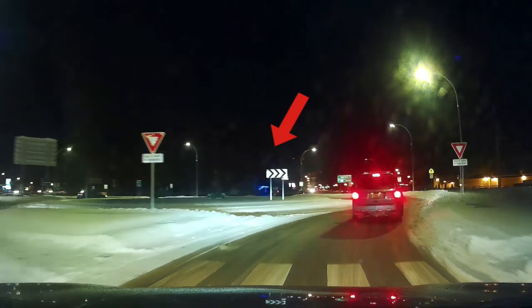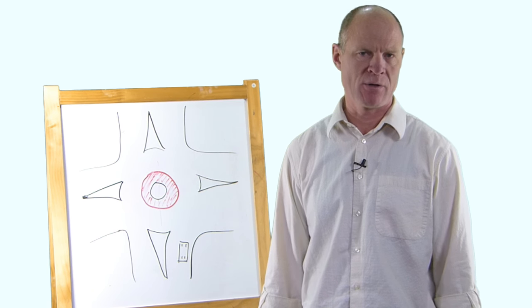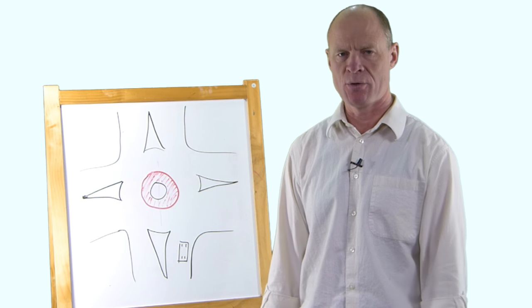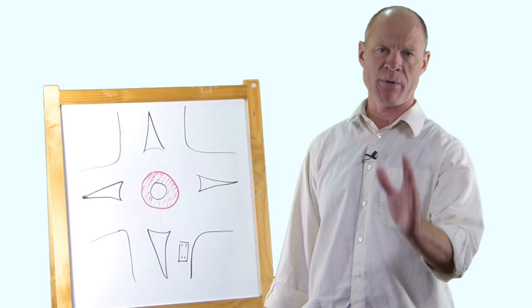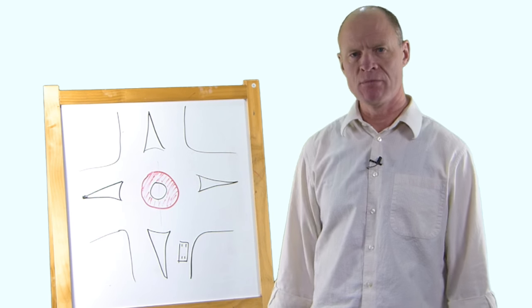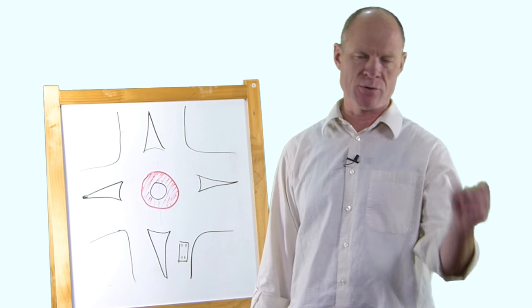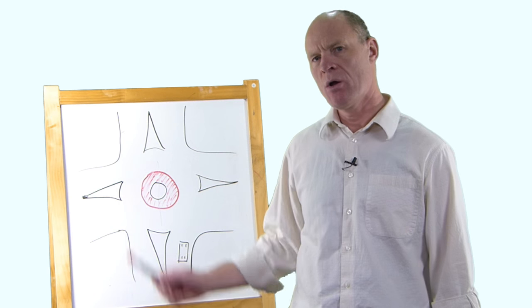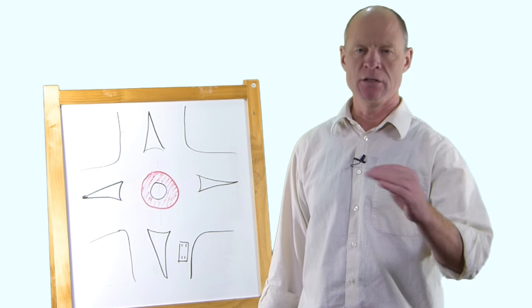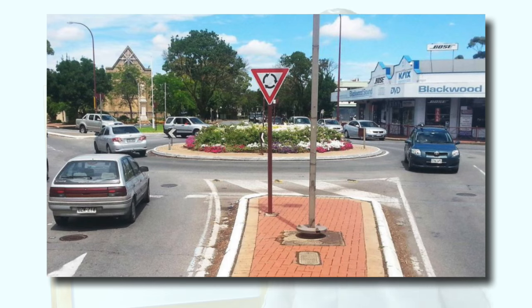When exiting, put your right signal on to indicate to other traffic that you're leaving the roundabout. There are arrows indicating the direction the roundabout flows. For those on the right side of the road, it's counterclockwise; for those in the UK and Australia on the left side, it's clockwise. Parts of the roundabout include splitter islands, which direct traffic in the flow direction. Almost all roundabouts — in the UK, Australia, Canada, and the United States — have yield signs with directional arrows showing which way traffic travels.